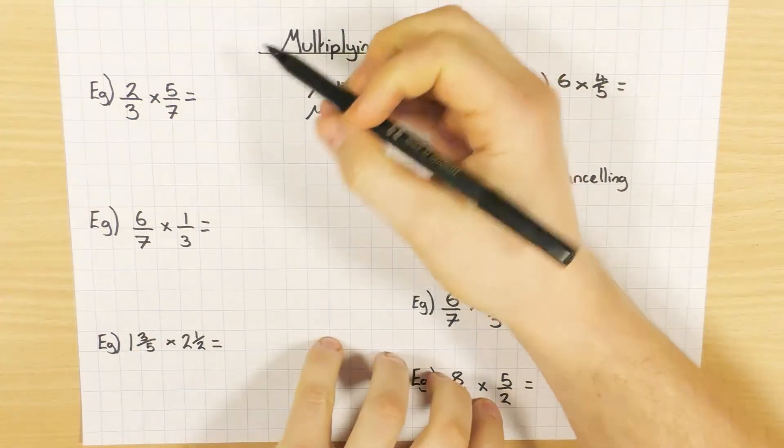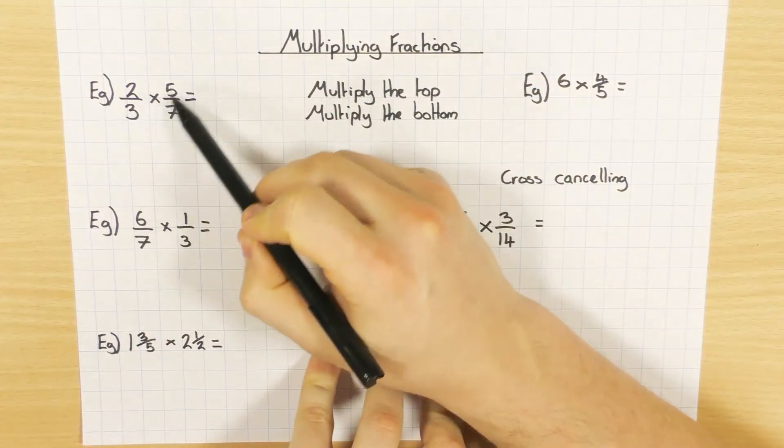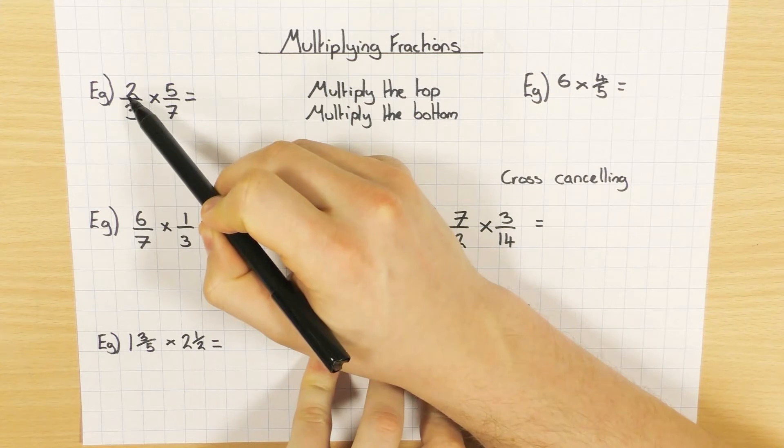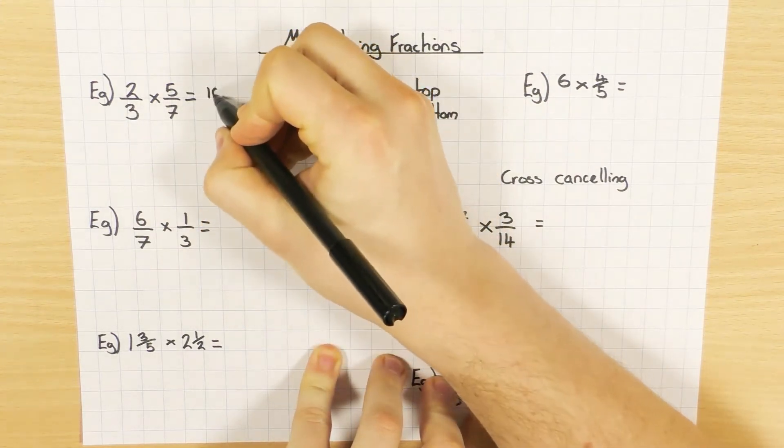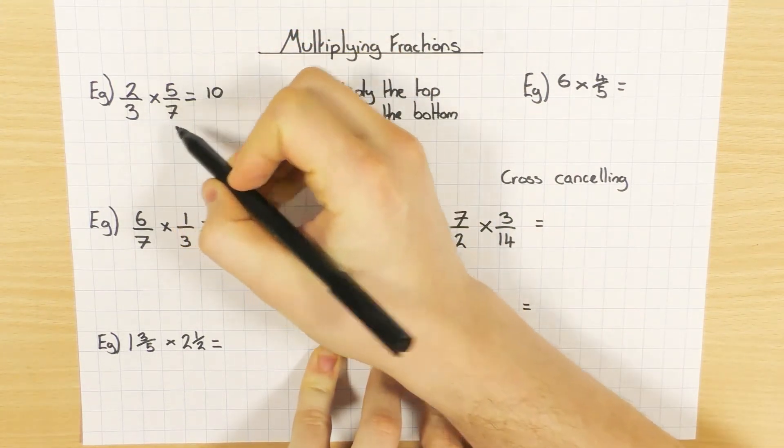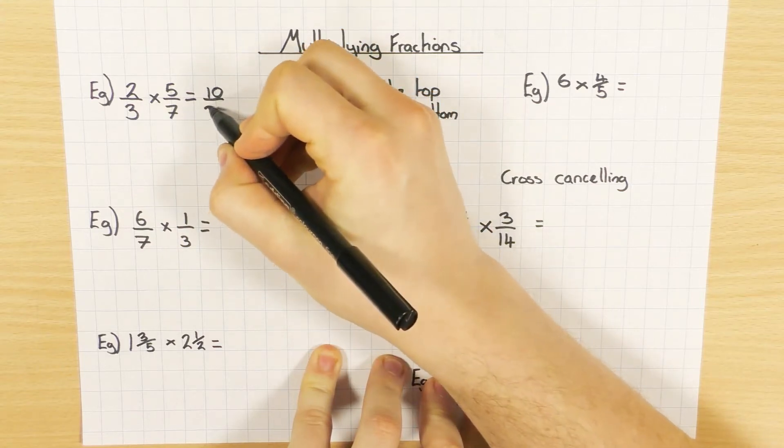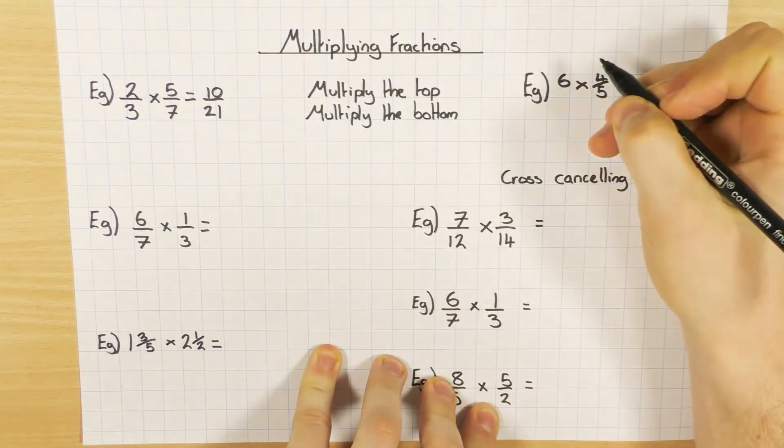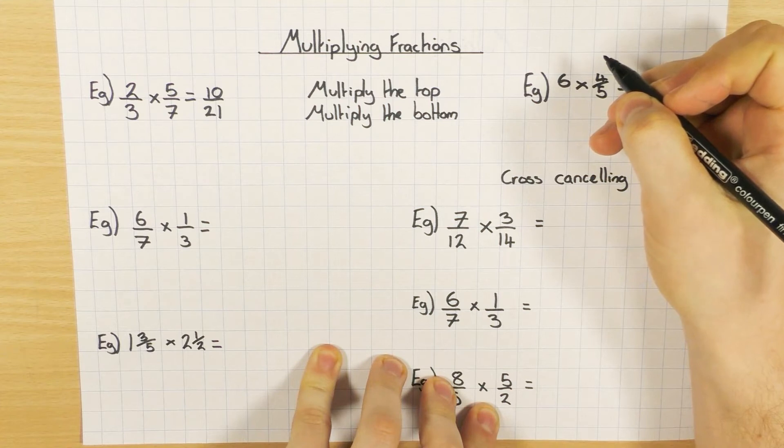So if we take the first example here, 2 thirds times 5 sevenths. Multiply the top, 2 times 5 is 10, and 3 times 7 is 21. So nice and simple there.